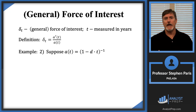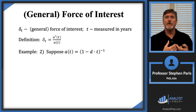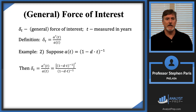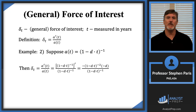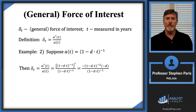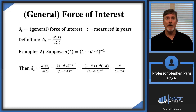Let's look at another example — the simple discount case. The accumulation function is (1 − d·t)^(−1), the reciprocal of 1 − d·t. For the force of interest at time t, in the numerator I take the derivative using the power rule and chain rule: bring the −1 down, giving −1 times (1 − d·t)^(−2) times the derivative of the inside, which is −d. The two negatives cancel, leaving d in the numerator. The force of interest for simple discount is d divided by 1 − d·t.